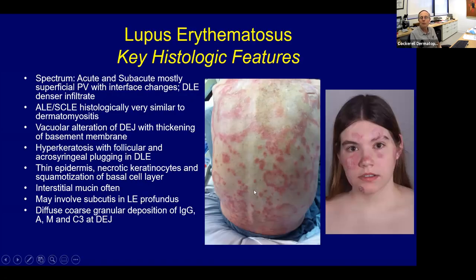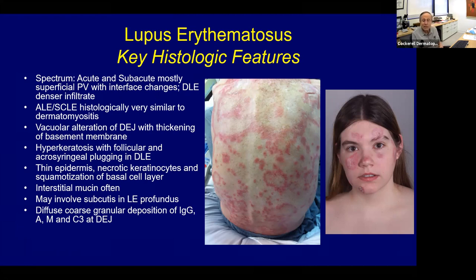Let's move on to connective tissue diseases — you're definitely going to get questions about this. Lupus erythematosus is our disease in dermatology and rheumatology, so they'll expect you to know everything about lupus: the clinical manifestations, discoid LE, acute LE, subacute LE, and the serology. You also need to know about dermatomyositis in detail with all the new antibodies and MD5-associated dermatomyositis. The histology of acute LE, subacute LE, and dermatomyositis is very similar — interface dermatitis with lymphocytic infiltrate and vacuolar alteration.